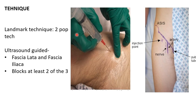Traditionally, fascia iliaca block was performed using a landmark technique called the two-pop technique — named because the needle passes through two fascias, producing a pop-pop feeling. Now we are using ultrasound guidance. The aim is to block at least two of the three nerves: femoral, lateral femoral cutaneous, and obturator, as described by the FLOW formula.